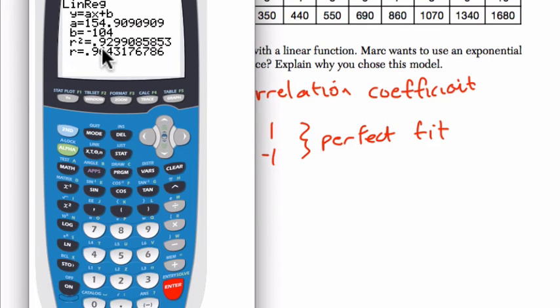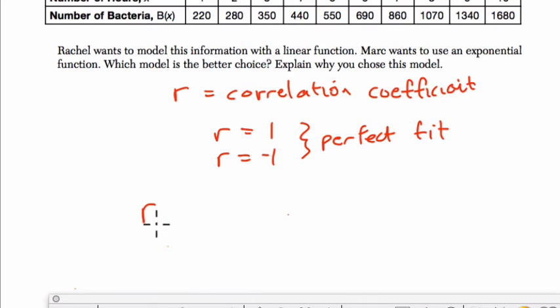Now it gives me the r value. So the r value, that's all we need to keep track of, is 0.96, right? So r for the linear, I'll write it down here, linear, is about 0.964. We'll leave it there. So we're rounding that.